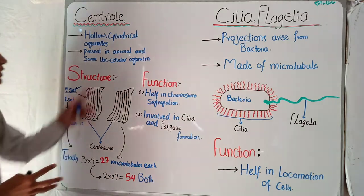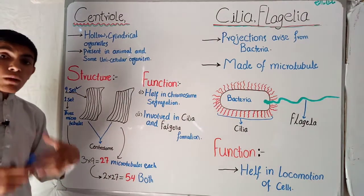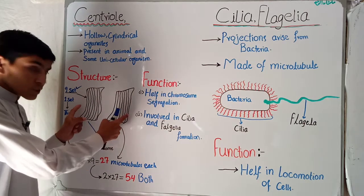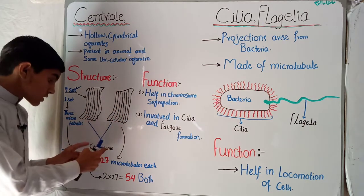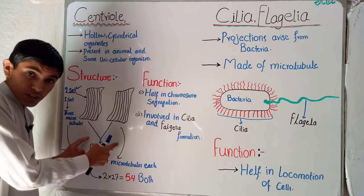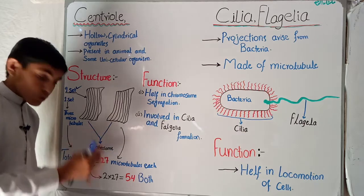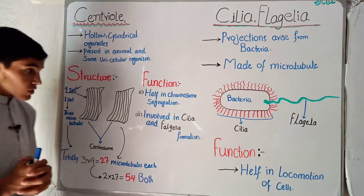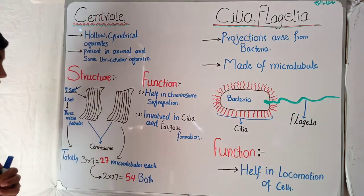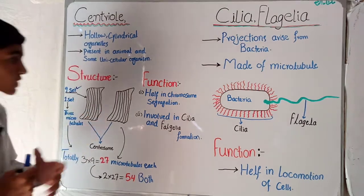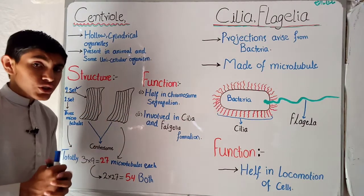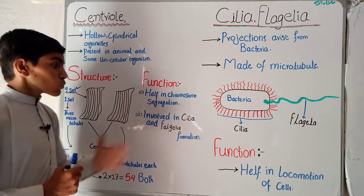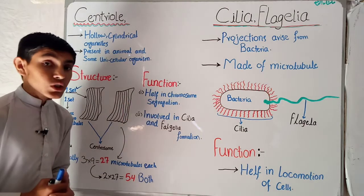So centrioles are made of microtubules, and both centrioles together form the centrosome, which contains 54 microtubules in total. Now let's look at the function — the function of centrioles is very important, as they help in chromosome segregation.